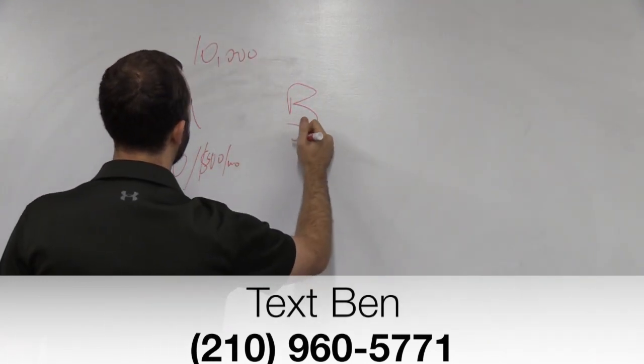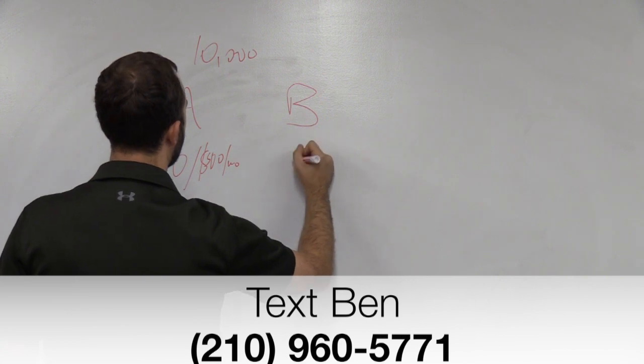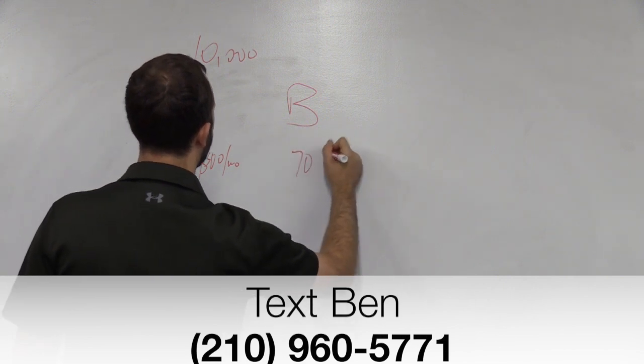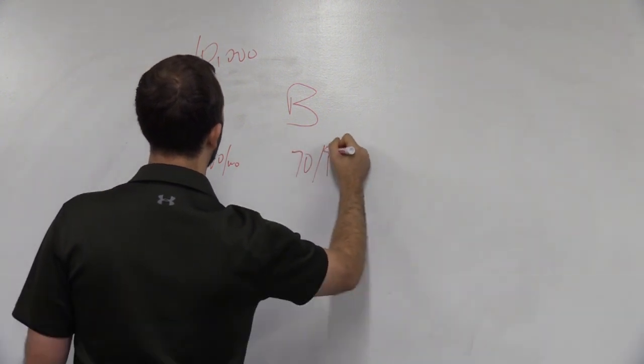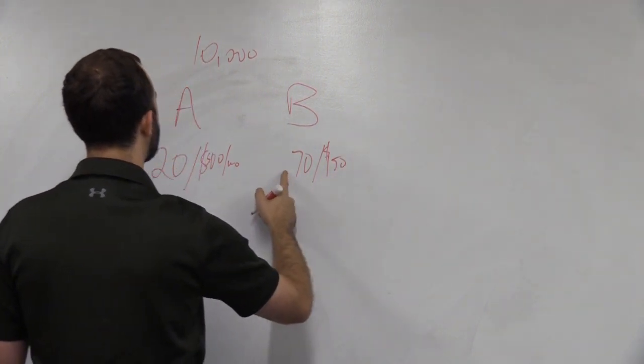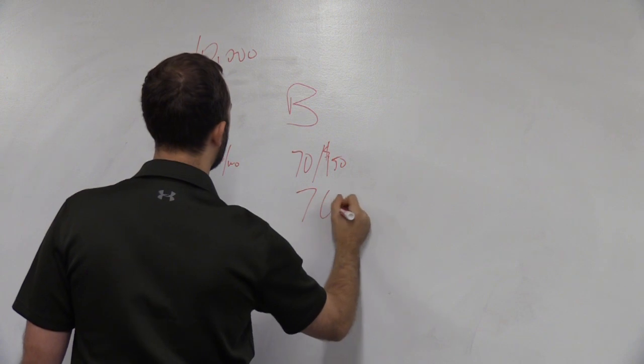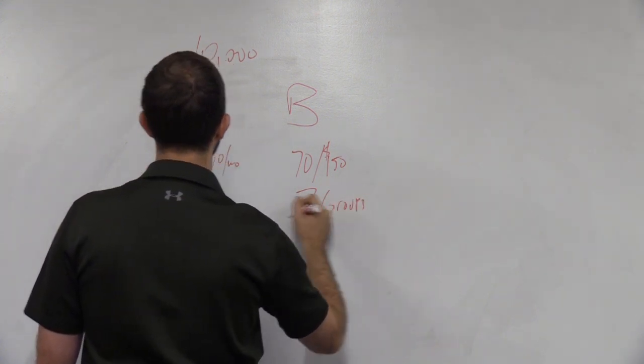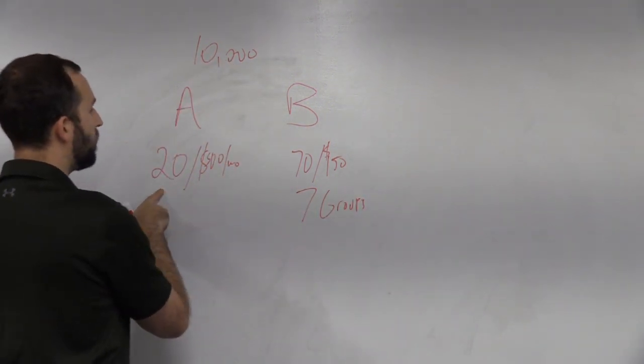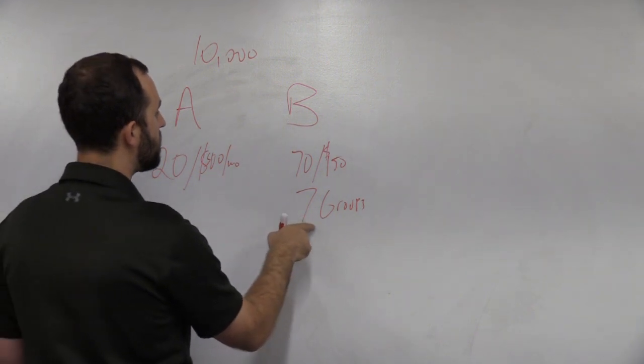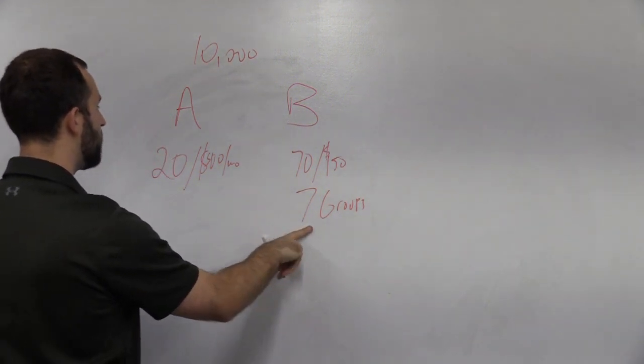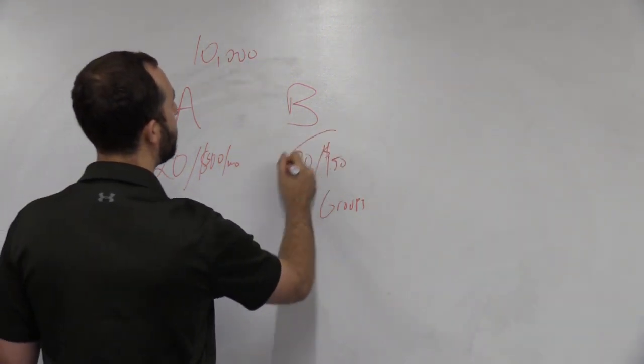We also talked about having group training set up and it was 70 kids at $150 a month. And that'd be groups of 10, so you'd have seven groups. So this is 20 hours of work per week. This is seven hours of work per week. This is obviously the more appealing option.